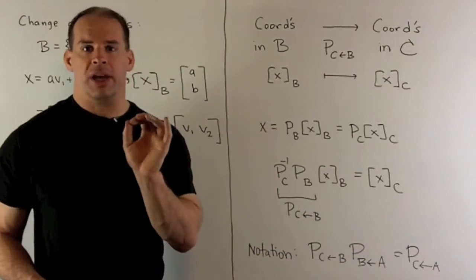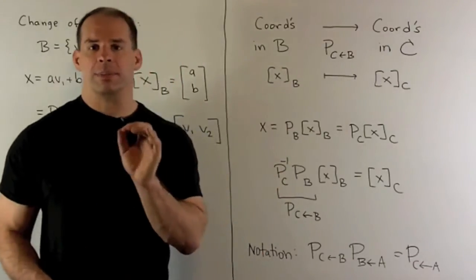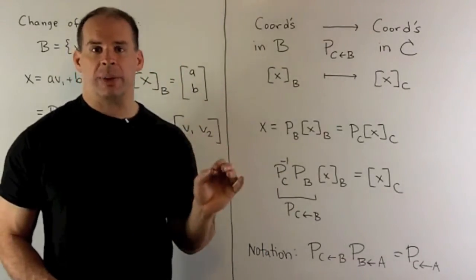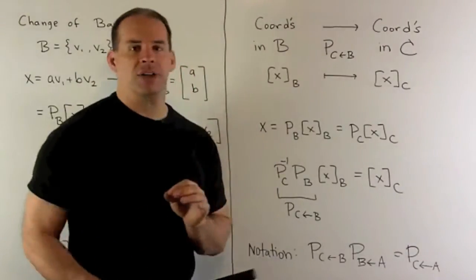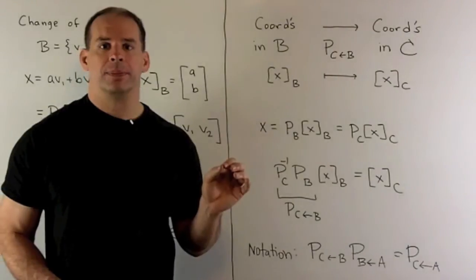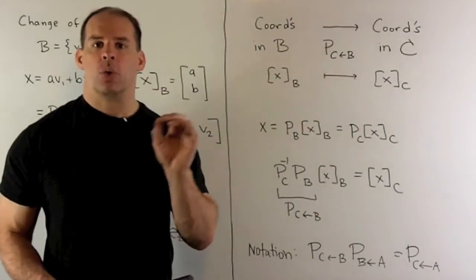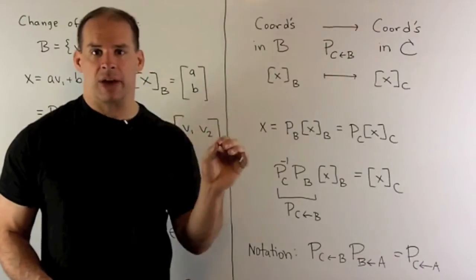So, note this is going to carry coordinates in B to coordinates in C. If we just consider what the matrices are doing, P_B carries coordinates in B to coordinates in the standard basis. Then, P_C inverse carries coordinates in the standard basis to coordinates in C. So, when we multiply, we're going to carry coordinates in B to coordinates in C by way of the standard basis.